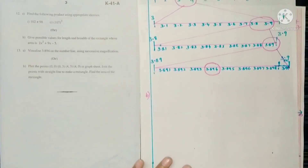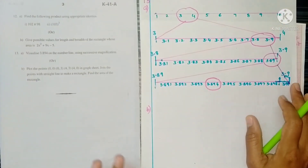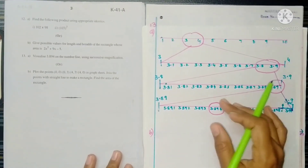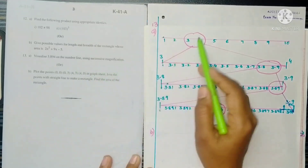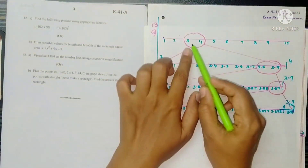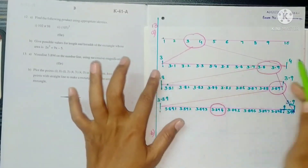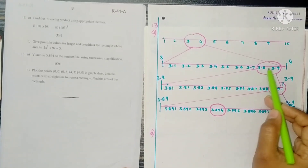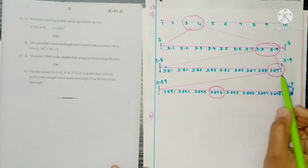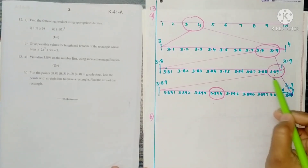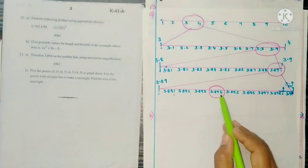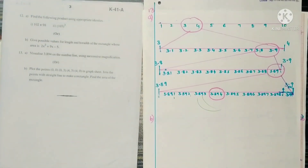Question 13a: Visualize 3.894 on the number line using successive magnification. 3.894 lies between 3 and 4. Zoom in: it lies between 3.8 and 3.9. Zoom in again to locate 3.89, then between 3.89 and 3.90 locate 3.891, 3.892, 3.893, 3.894 — this is the required value.